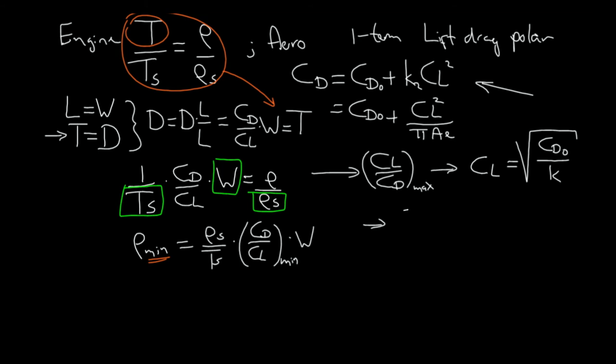This also means that if I take the lift-drag polar then CD is CD0 plus this CL squared which is CD0 divided by K squared divided by K. And if we try to solve this equation then we know that this K is equal to 1 over pi Ae.